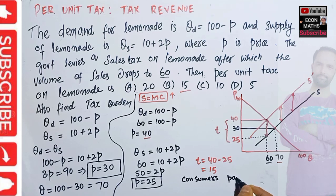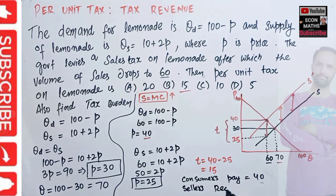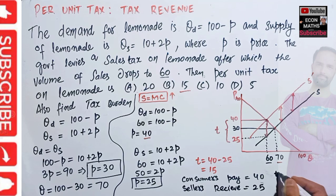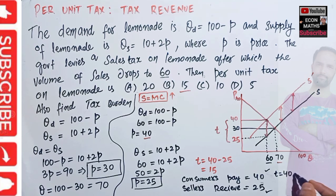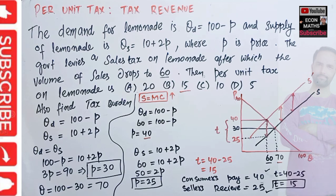Consumers pay 40 dollars after the imposition of the per unit tax, while sellers receive only 25 dollars. Therefore, T equals what consumers pay minus what sellers receive, that is 40 minus 25, which comes out to be 15.